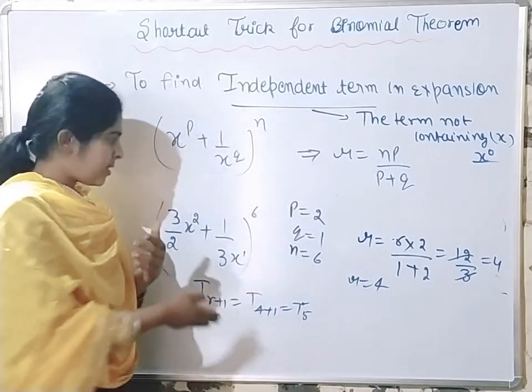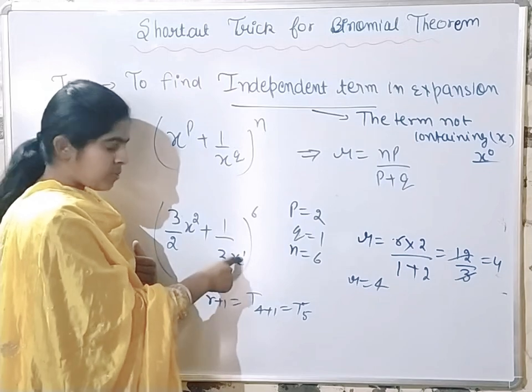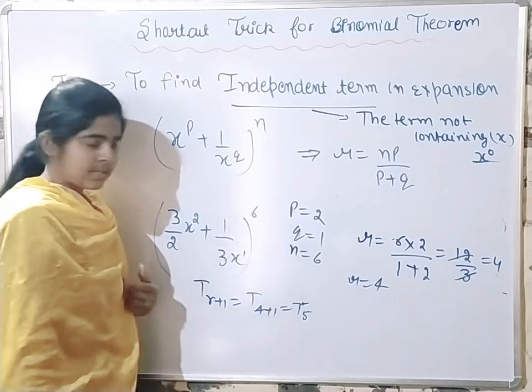So here we have a sum: (3 upon 2x square plus 1 upon 3x) raised to power 6. The value of n is 6.